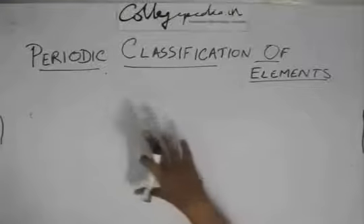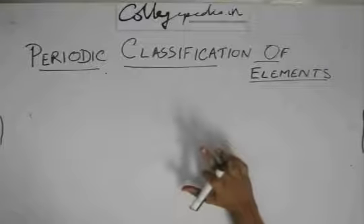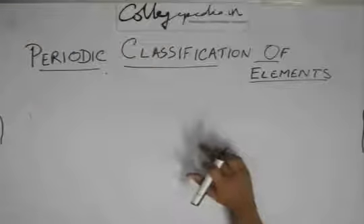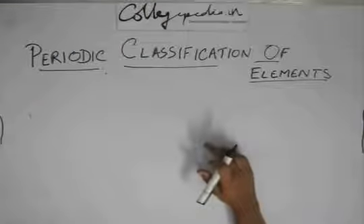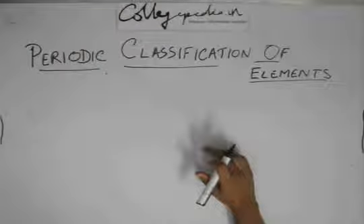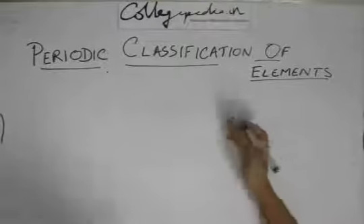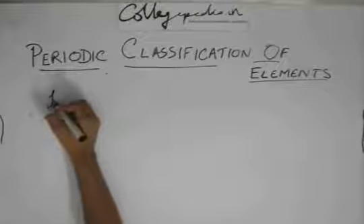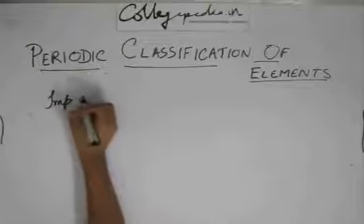So this modern periodic table as it exists now is the best form of periodic table which we can find till now, but it also has its disadvantages. We'll not go into its disadvantages right now. And hopefully we'll get a better periodic table than the modern periodic table. But right now focusing on the important questions of this chapter.